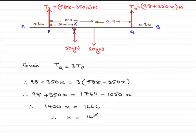And you've got x equals 1666 divided by 1400. Do that on a calculator, and what you get is that therefore x equals 1.19.